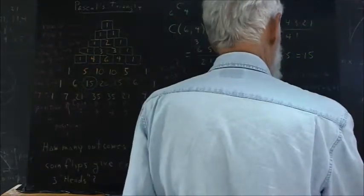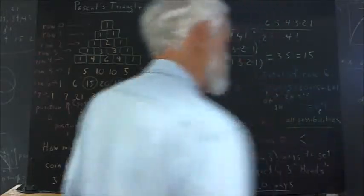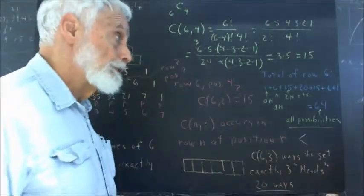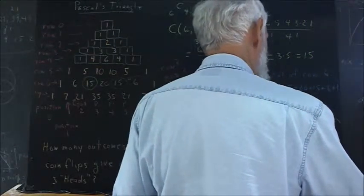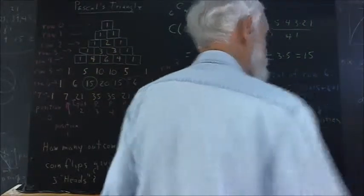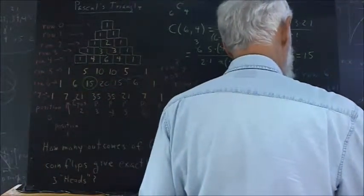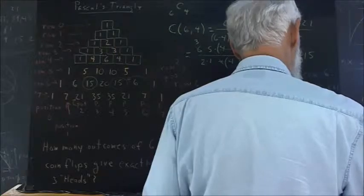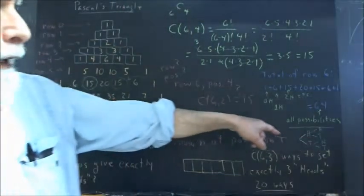Now, we could begin a tree for six coins. Now, obviously, I don't have room to do the whole tree, but the first flip could be heads or tails. The second flip could be heads or tails.